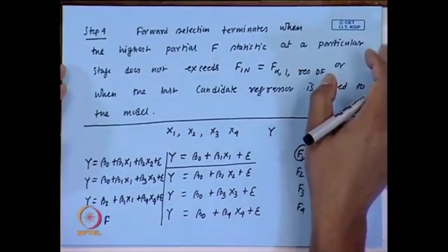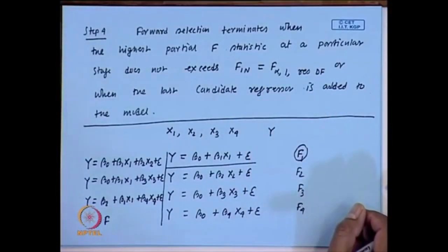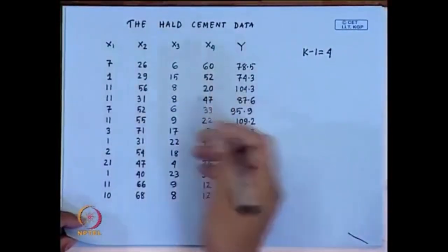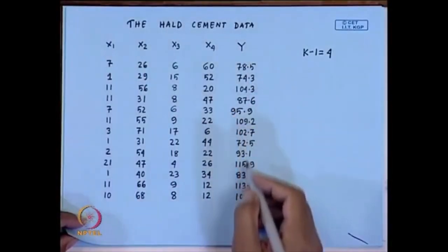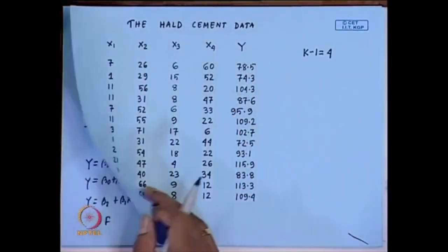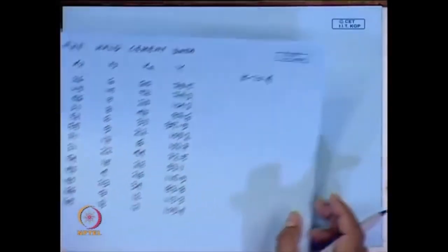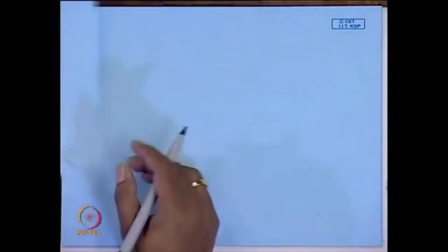Let me explain the algorithm in detail. This is the outline. Now I will be considering the Hald cement data again. It has 4 regressors and 1 response variable y. I will illustrate the forward selection technique using the Hald cement data.